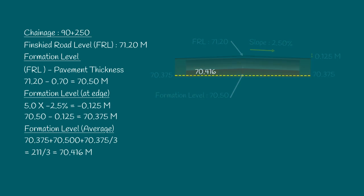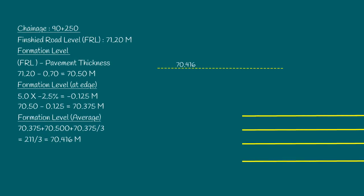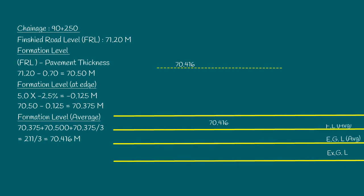Now let us see the field measurements taken at the site. After cleaning the site, the existing ground levels are taken. First level at center of the road is 69.416. In the left-hand side at 2.5 meter intervals: 69.516; at 5 meter intervals: 69.606; at 7.5 meters: 69.616. Similarly, at the right-hand side at 2.5 meters: 69.526; at 5 meters: 69.626; and at 7.5 meters: 69.616.